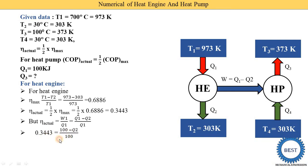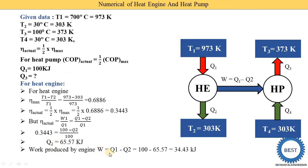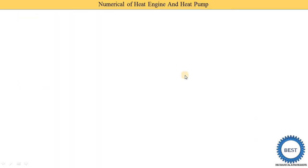With actual efficiency 0.3443 and Q1 = 100 kJ, we solve for Q2. Simplifying, Q2 = 65.57 kJ. Work produced by the engine is W = Q1 minus Q2 = 100 minus 65.57 = 34.43 kJ. So we have found all heat engine parameters: Q2 and work done. The work supplied to the heat pump is also 34.43 kJ.